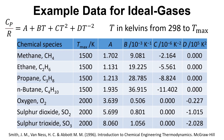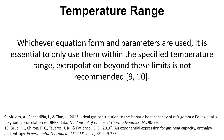Here's an example of some different parameters that have been reported in Smith and Van Ness from 1996, using the form Cp over R shown here. T is in Kelvin and you can go from 298 Kelvin up to a maximum temperature shown in the table. Whichever form of the equation and parameters are used, it's really important that you only use them within the specified temperature range — extrapolation beyond those limits is really not recommended.